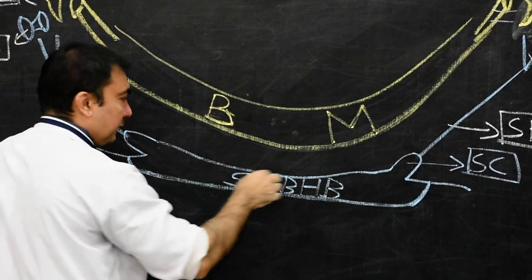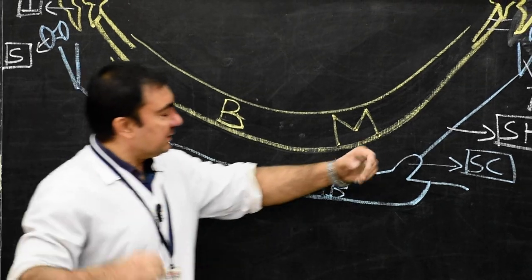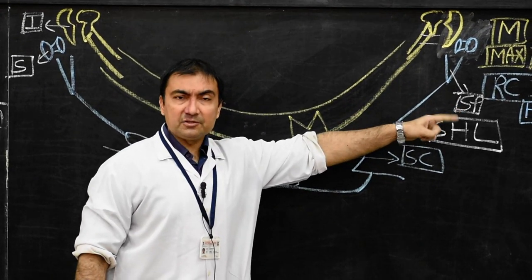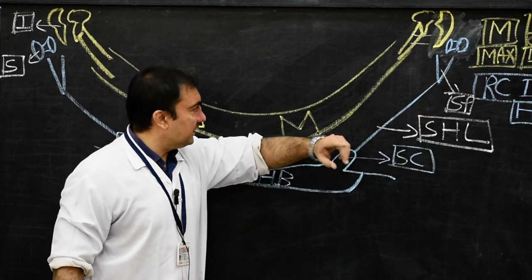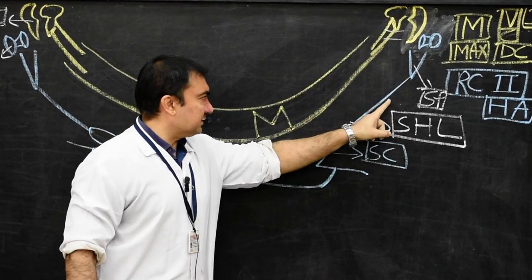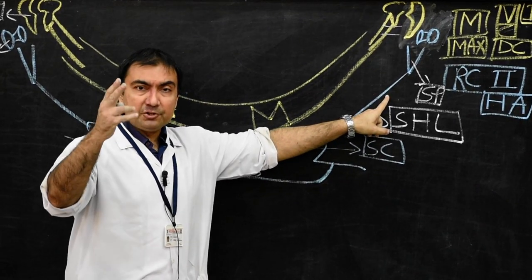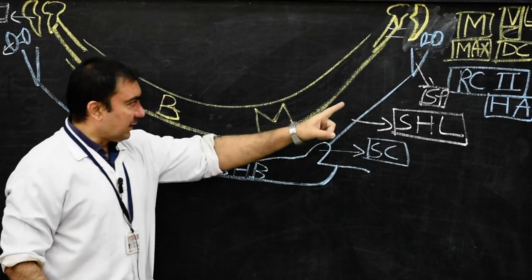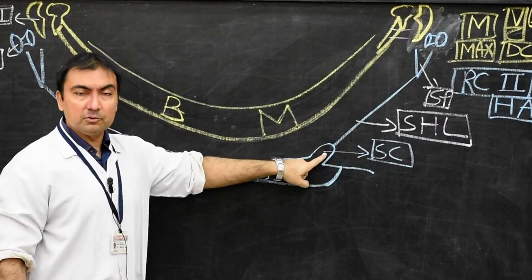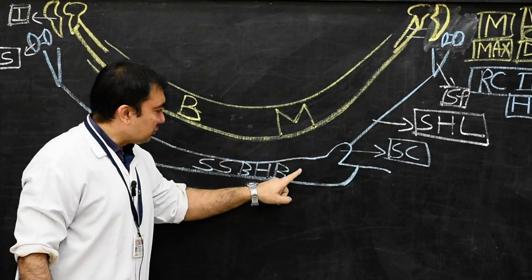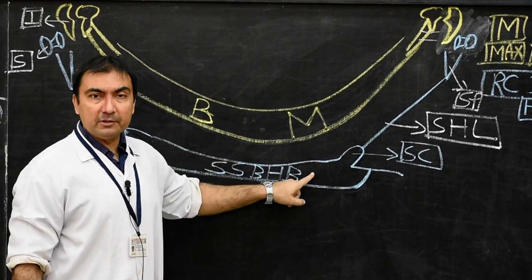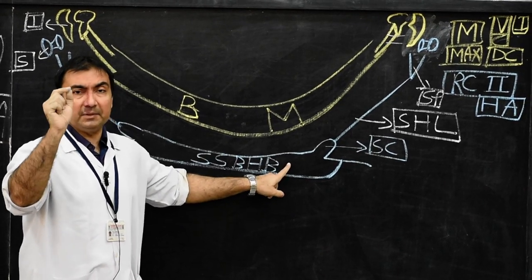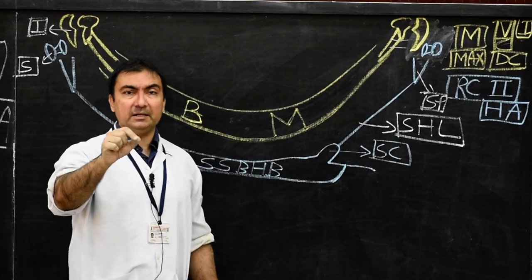In summary: three derivatives from the dorsal part of Reichert's cartilage — stapes, styloid process, and stylohyoid ligament — and two derivatives from the ventral component: lesser cornu of the hyoid bone and superior surface of the body of the hyoid bone. Here we finish the skeletal derivatives of the second pharyngeal arch, which can be asked as an independent short note.